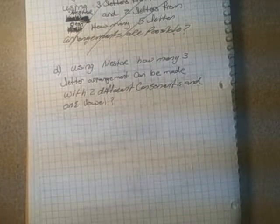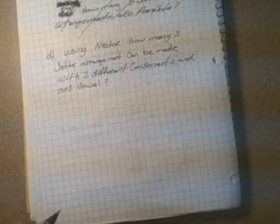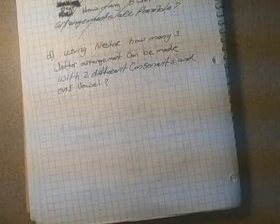This one's using the same sort of idea again. It says, using Nestor, how many three letter arrangements can be made with two different consonants and one vowel?